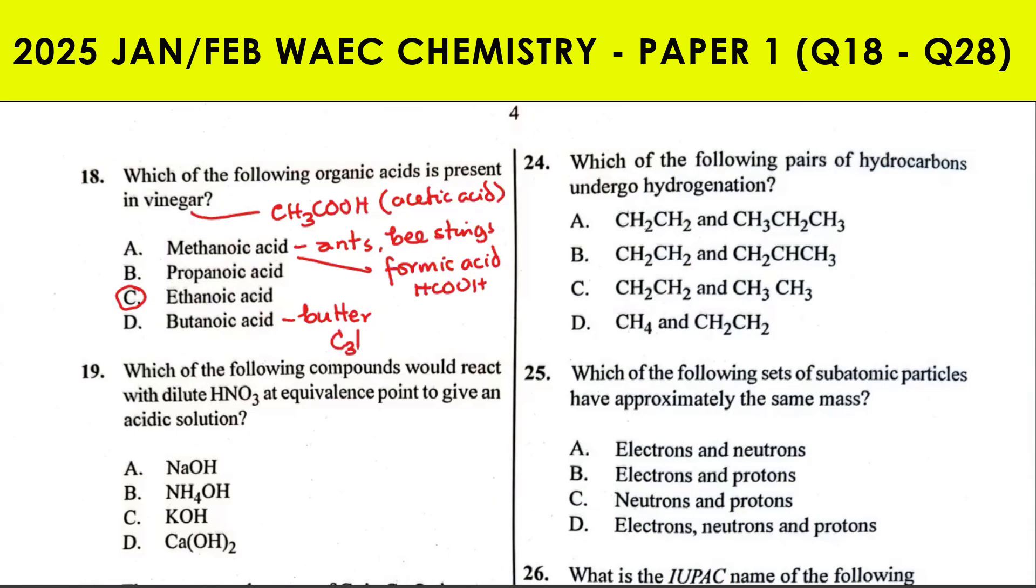Natural source of butanoic acid is butter, that's C₃H₇COOH. Propanoic acid is found in human sweat. It's also called propionic acid, but this one is called butyric acid.